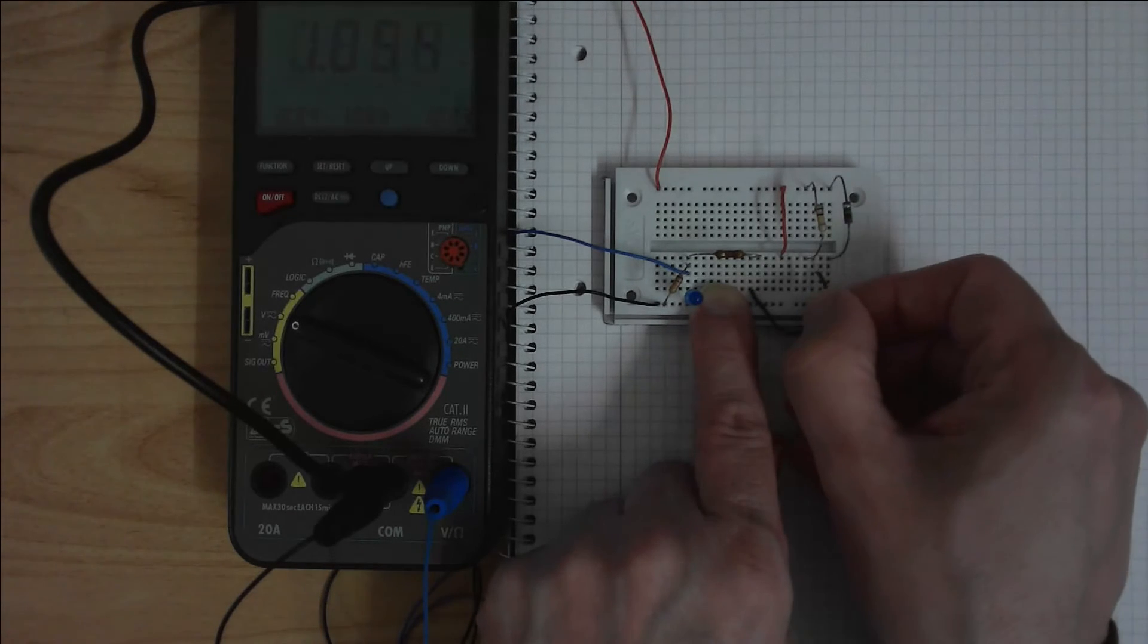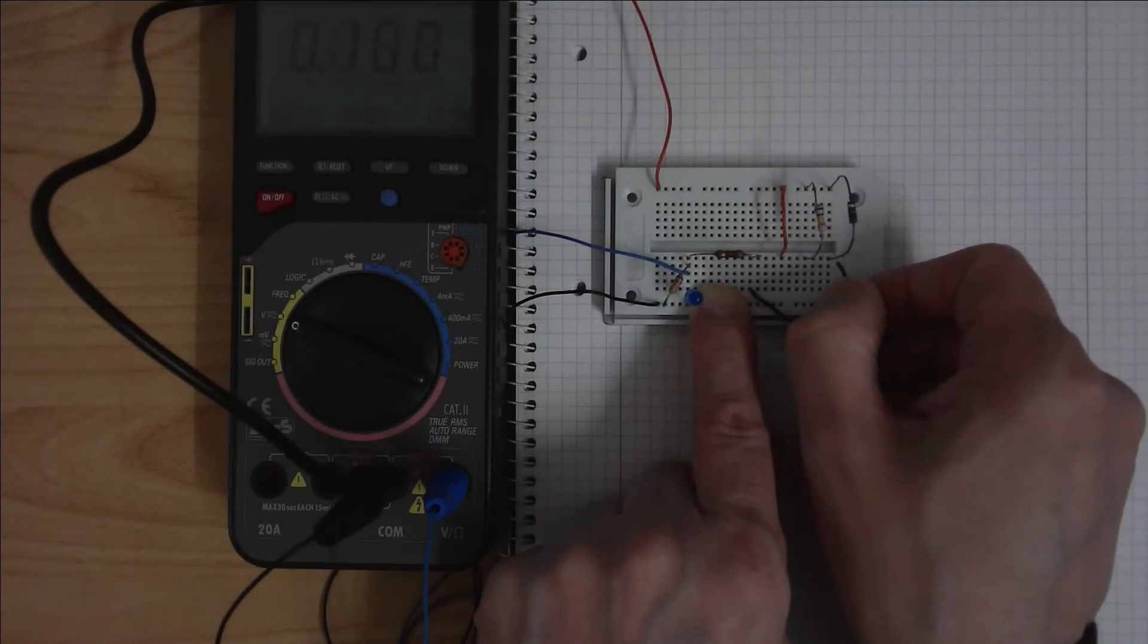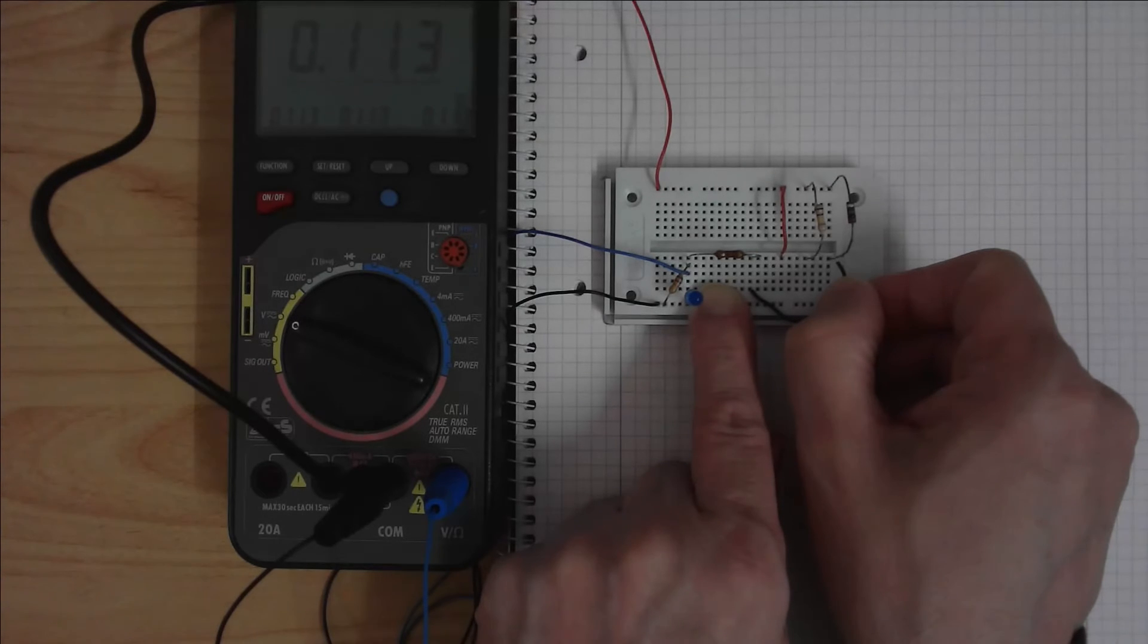When I switch via the 100K ohm we have only 1V forward voltage and the LED is not illuminated. And if I switch to the 1M ohm we have 0.1V forward voltage and the LED is also not illuminating.